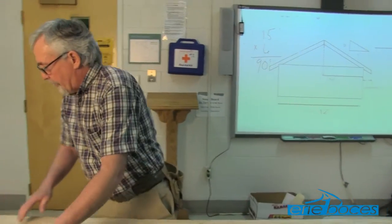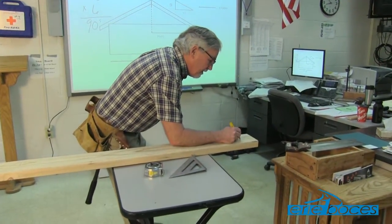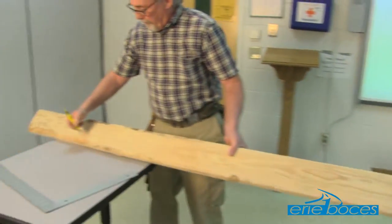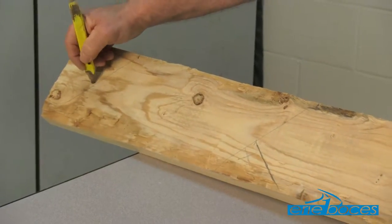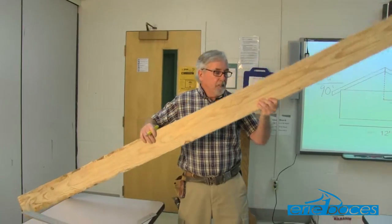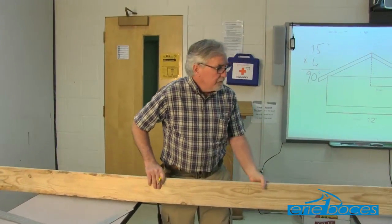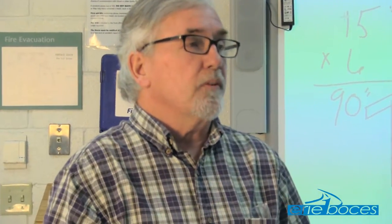Now we're ready to cut the rafter: cut on the ridge plumb cut line, cut out the bird's mouth, and cut the rafter tail plumb cut. When the rafter is in position all those plumb cuts will be perfectly vertical. Once you cut one out, mark it as a pattern. For a gable roof — one that slopes from the double top plate to the ridge board in two directions and is made up entirely of common rafters — you can use that pattern for all rafters throughout the whole building.